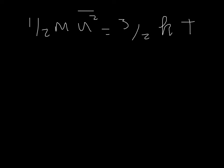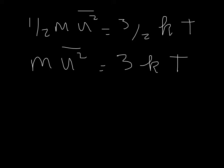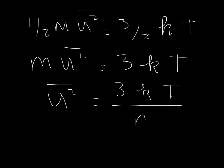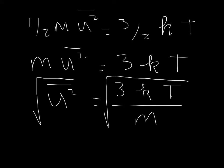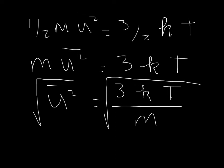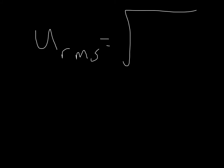What we're going to do is multiply both sides by two to get rid of the one-half, and we'll get m u squared average is equal to three K T. Then we're going to divide both sides by m, and that's going to give us the average of u squared is equal to three K T divided by m. And then let's take the square root of both sides. We get an equation that looks like this: u rms is equal to the square root of three K T over m.